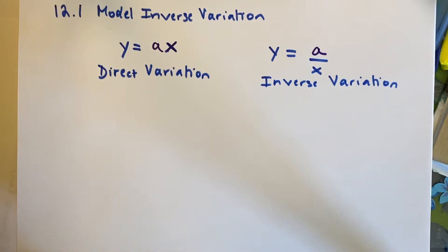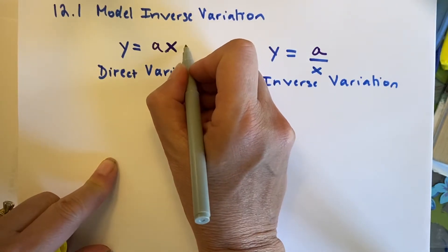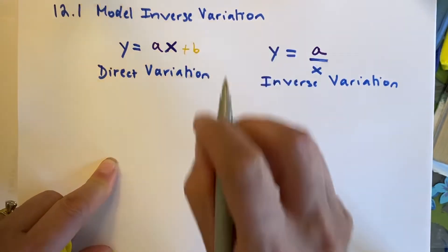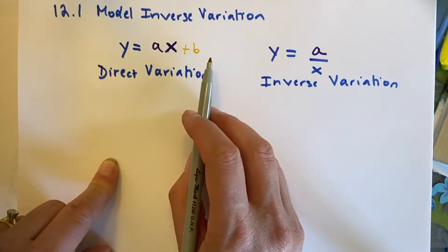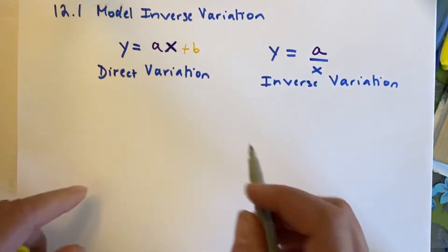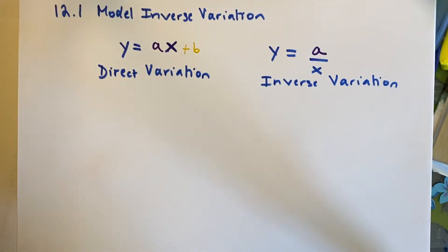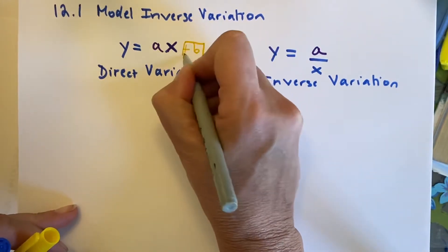So, both have a constant a. I'm going to put something in yellow, so it's not really obvious, and it's not really a part of what we're doing. So, if you had plus b, it would be a linear equation, but it is not ax plus b. It's just ax, and that's what makes it a direct variation.